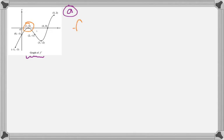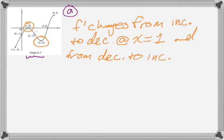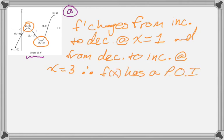So identify the first one. Jot down your reason. So f prime changes from increasing to decreasing at x equals 1. So we know that f of x will have a point of inflection there. And then we know that f prime changes from decreasing to increasing at x equals 3. And therefore, f of x has points of inflection at each of those values. So that would be my answer to that.